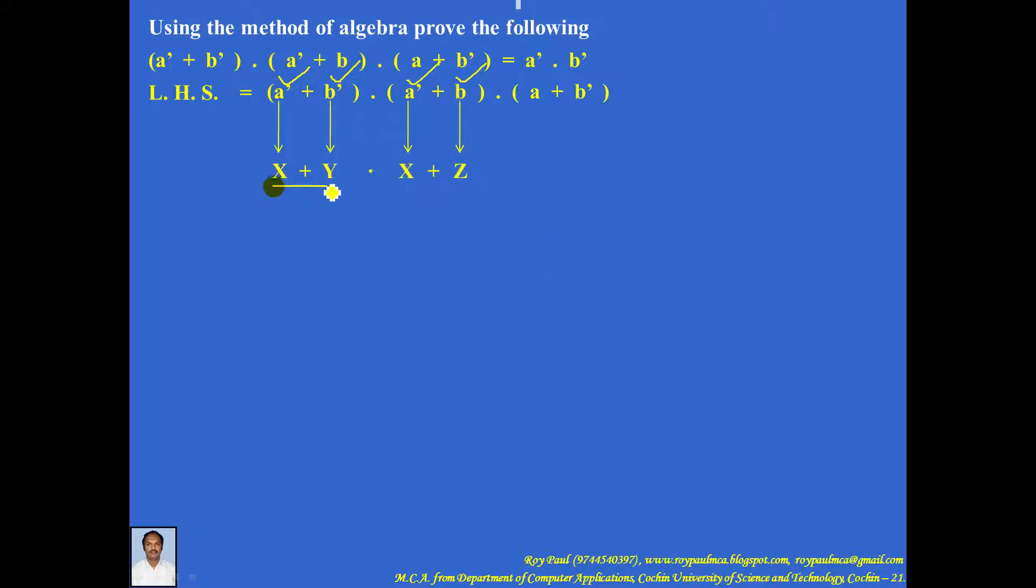So now it is of the form (x + y) into (x + z). And by the second distributive law, (x + y) into (x + z) is x plus y·z.